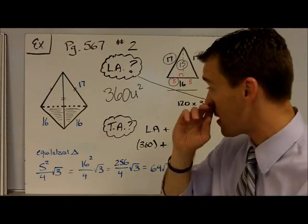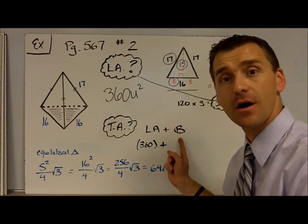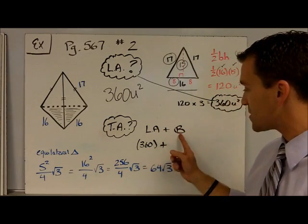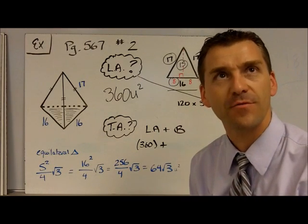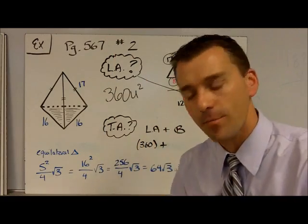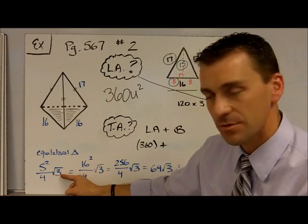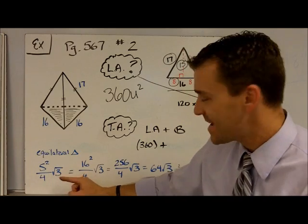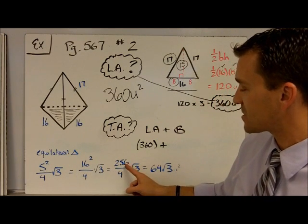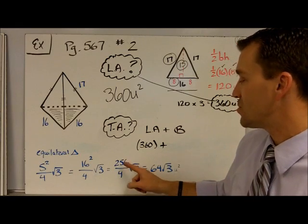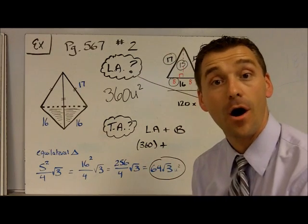Now to find the total surface area, I've got to take the lateral surface area and add that to the area of the base. So I've got 360 plus the area of the base. Well, that base is just an equilateral triangle. I think I remember a formula for the area of an equilateral triangle. There's your formula: S squared over 4 times root 3. I know the side length of my equilateral triangle is 16, so I put 16 in for S. 256 over 4 attached to root 3. 256 over 4 just reduces down to 64 root 3. So this right here is the area of the base.